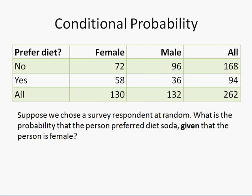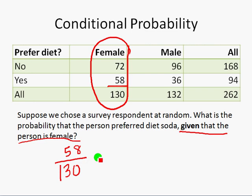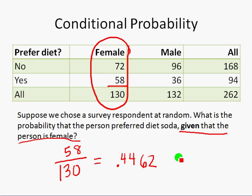Now a slightly different question — still females and diet soda, but this time we are given that the person is female. We restrict ourselves just to the females: 130 females in the survey. Out of those, 58 preferred diet soda. So the probability that we pick somebody who wants diet soda given that the person is female is 58 out of 130, or as a decimal .4462.